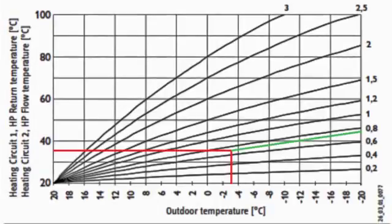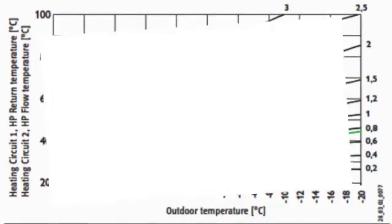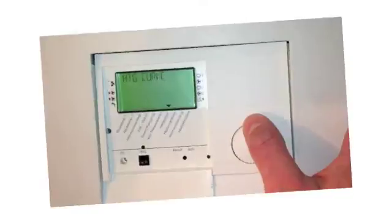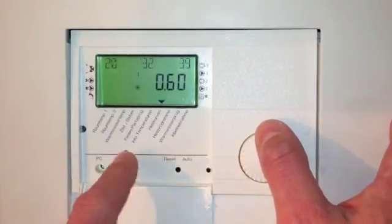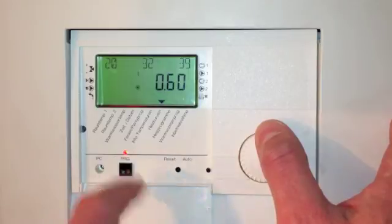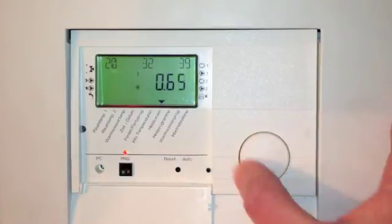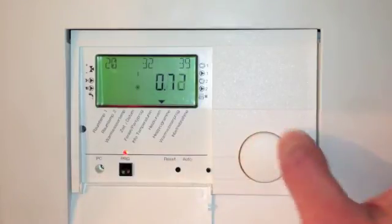To determine the right setting you need to know the design return temperature at the design outdoor temperature. For example, 35 degrees at minus 3 outside gives a curve of approximately 0.78. To adjust the heat curve, enter the heat curve menu. It's factory set to 0.6. Use the program button to access the setting adjustments and use the jog dial to change them.